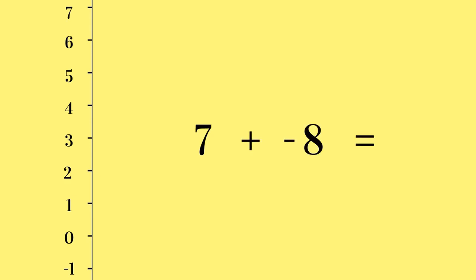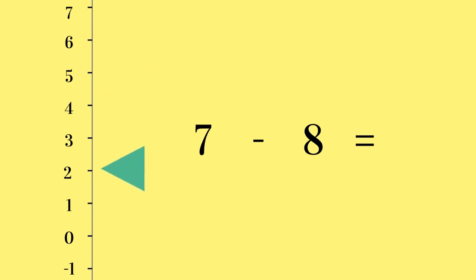Here is a question for you to try: 7 plus negative 8. Pause the video and have a go. To find the correct answer, the plus sign disappears, leaving you with 7 minus 8. By starting at 7 and counting 8 down the number scale, we find the answer negative 1.